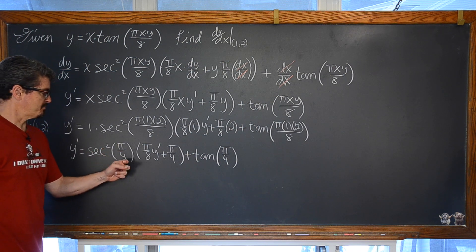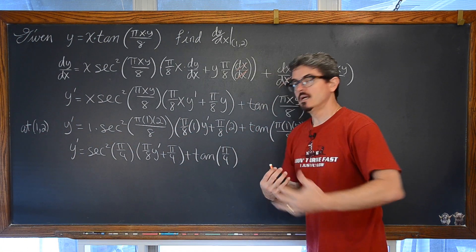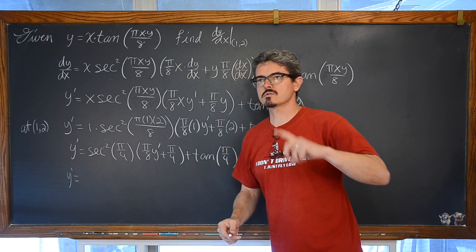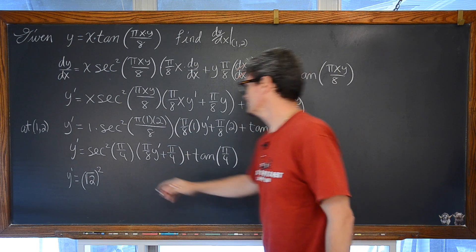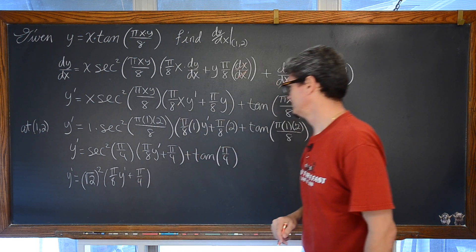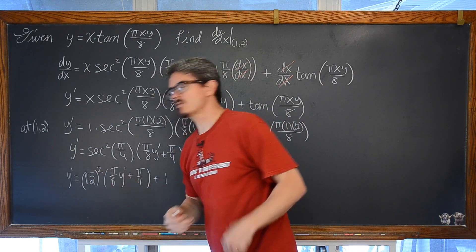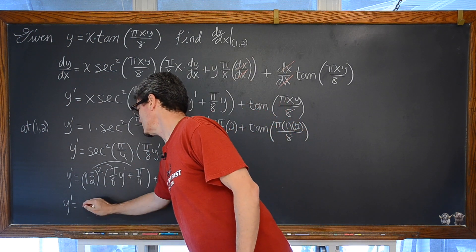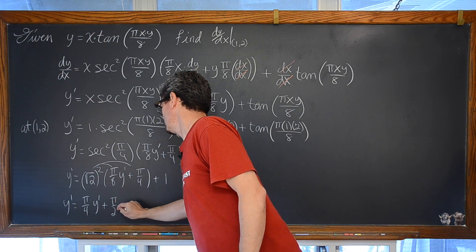Simplified, we have y prime is equal to secant squared of (pi over 4) times (pi over 8)·y prime, plus pi over 4, plus tangent of pi over 4. Now let's work out our unit circle. The secant of pi over 4 is one over cosine, which gives us the square root of 2, squared — times (pi over 8)·y prime, plus pi over 4, plus tangent of pi over 4 is equal to 1. Well, the square root of 2 squared is 2. Distributing that value of 2 gives us y prime equals (2 over 8), which is one-fourth, times y prime, plus pi over 2, plus 1.